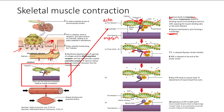Myosin is ready to bind to actin again, as long as tropomyosin is not blocking the way. Going back — even after ADP is released and it's finished the stroke, myosin is still bound to actin. That's what happens when someone dies and their muscles are contracted, which is what we call rigor mortis.